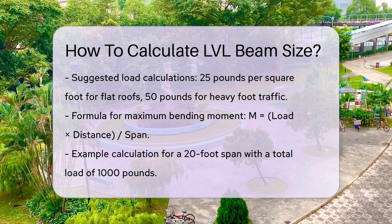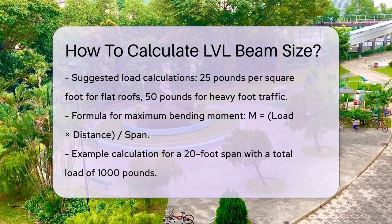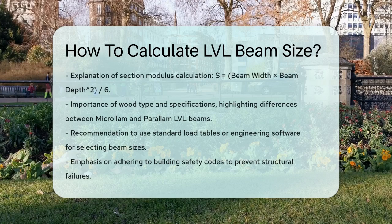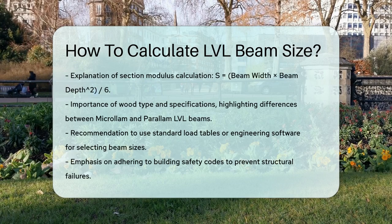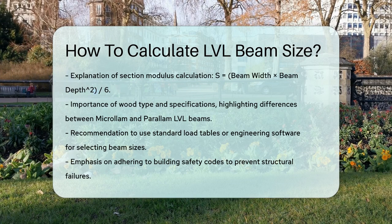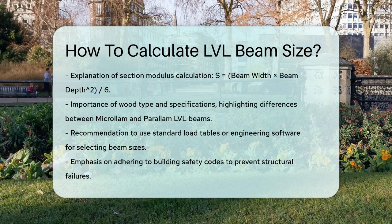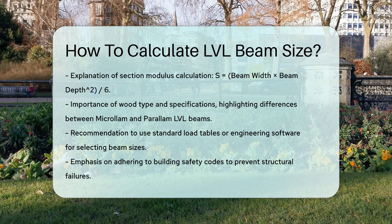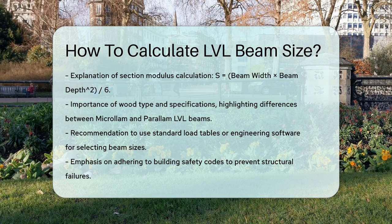Another important aspect is the type of wood and its specifications. Different types of LVL beams, like Microlam or Parallam, have different strength characteristics and sizes. For example, Microlam LVL beams come in widths of 1.75 inches and depths ranging from 5.5 inches to 20 inches.